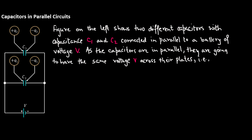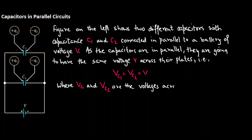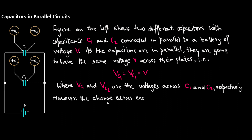That is, the voltage across capacitor C1 will be equal to the voltage across capacitor C2, which equals the battery voltage V, where Vc1 and Vc2 are the voltages across C1 and C2 respectively. However, the charge across each capacitor will be different.